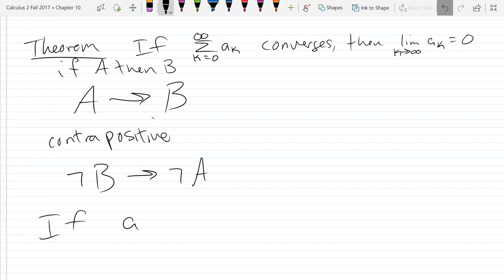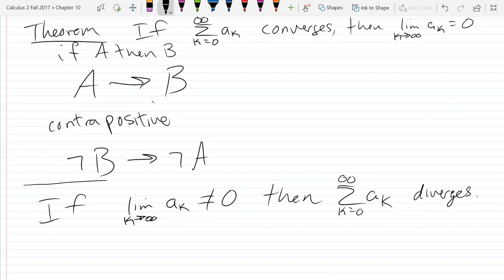If lim k approaches infinity, ak is not 0, then summation ak diverges. So it's the opposite of the conclusion. So if the limit is not 0, then the opposite of the hypothesis is it does not converge, which means diverge. This is called the nth term test for divergence.